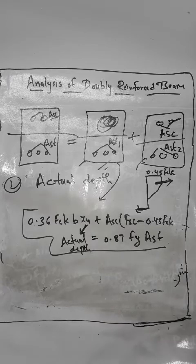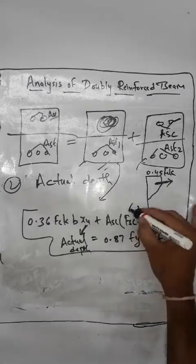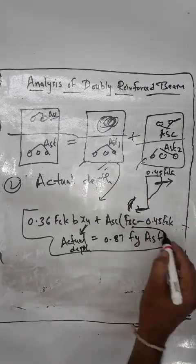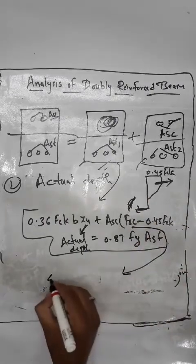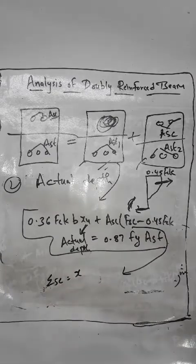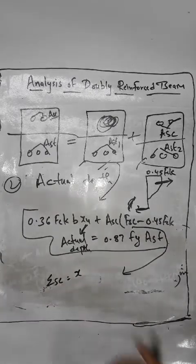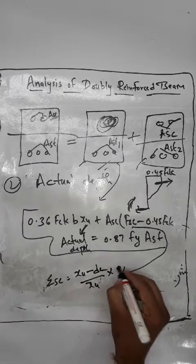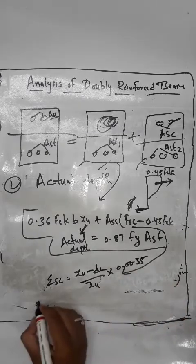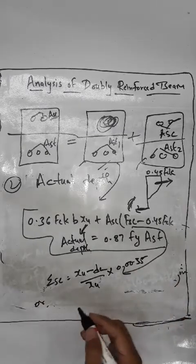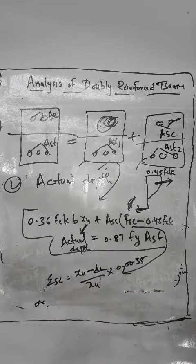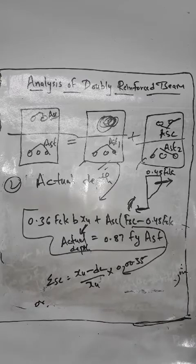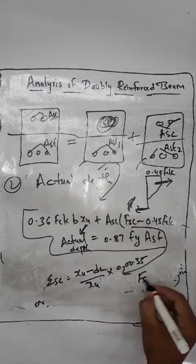In this equation there are two unknowns: XU and FSC. The FSC value is found using the ESC equation derived earlier, or alternatively from the chart given in IS456-2000.